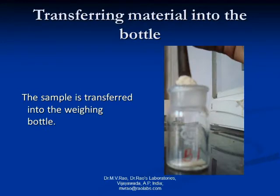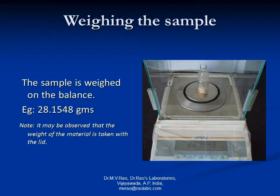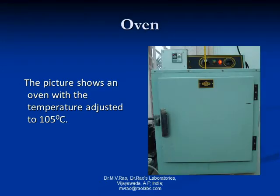The sample is transferred into the weighing bottle carefully with the help of a spatula. With the lid closed, the sample is weighed on the balance. This picture shows an oven with the temperature adjusted to 105 degrees centigrade. Remember, the oven has already attained a temperature of 105 degrees centigrade by the time we start the experiment.